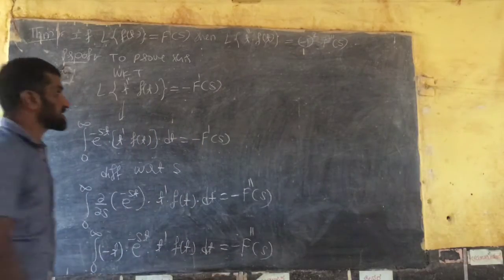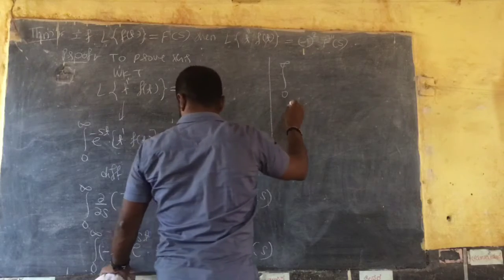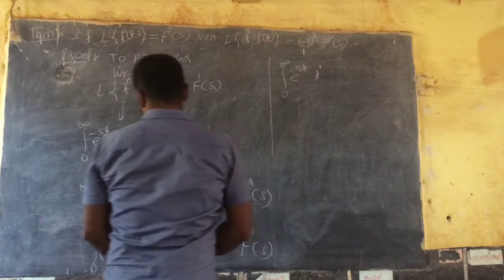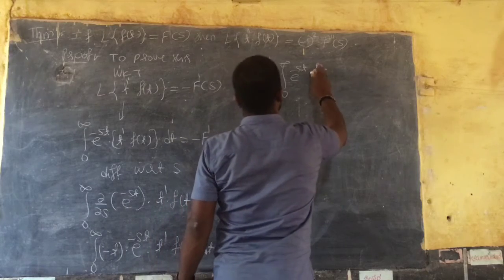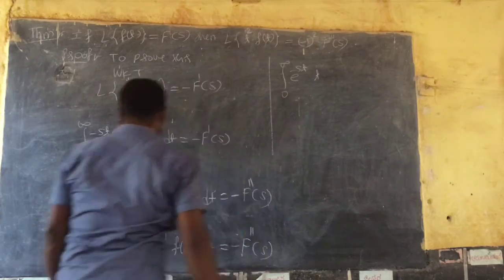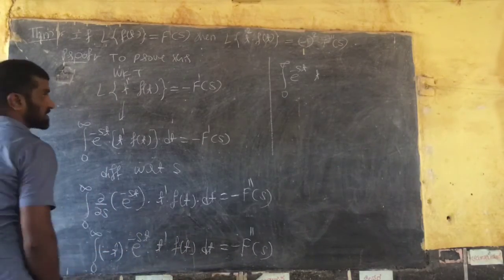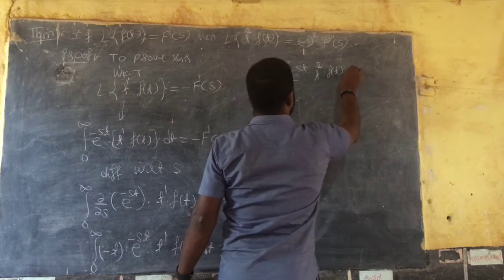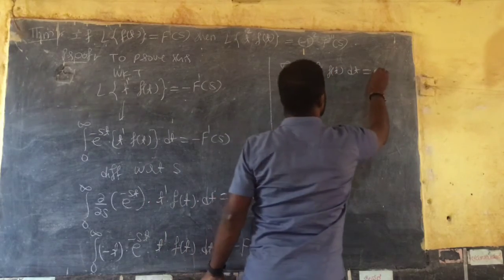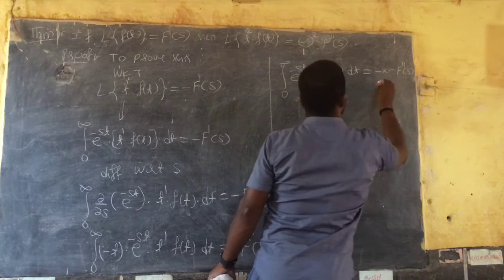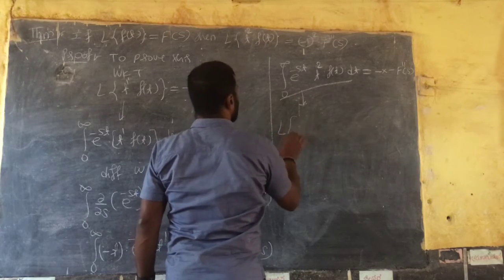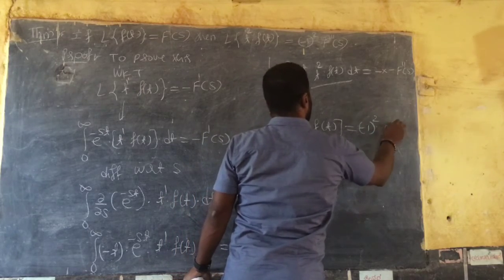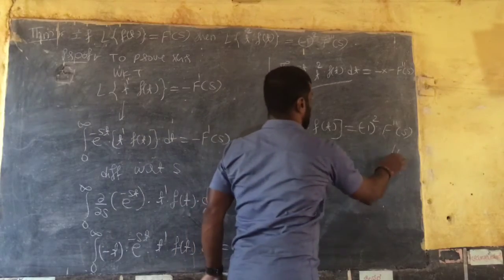Multiplying through: 0 to infinity of t · e to the power minus st · f(t) dt, which is the Laplace of t² · f(t), equals plus F double dash of s, since minus times minus is plus. This is exactly the Laplace of t² · f(t) equals (-1)² · F double dash of s. This completes the proof.